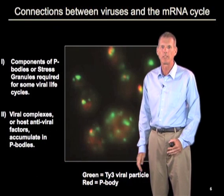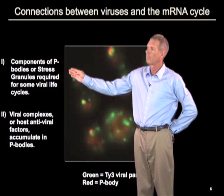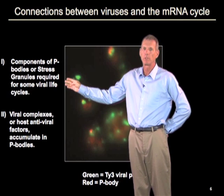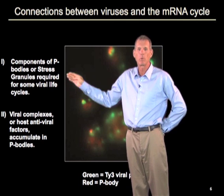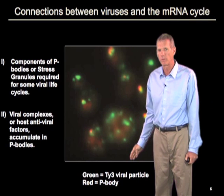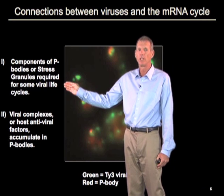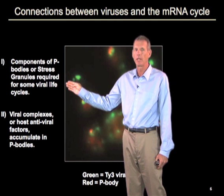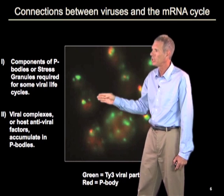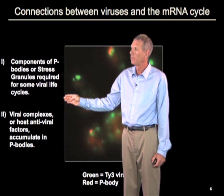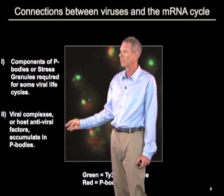The third reason I find these interesting are connections between viruses and the mRNA cycle. In several cases, components of p-bodies or stress granules are required for viral life cycles. For example, components of p-bodies are required for retrotransposons — retroviral-like elements in yeast — and components of stress granules, such as a protein called DDX3, is required for translation of HIV genomic RNAs, as well as for hepatitis C viral life cycles. In some cases, viral complexes or host antiviral factors accumulate in these structures.